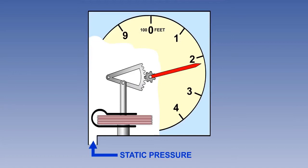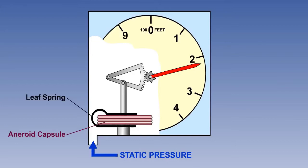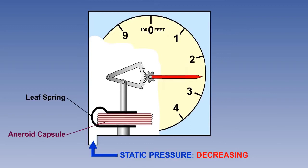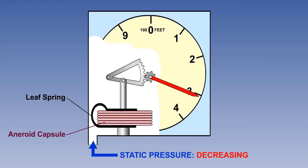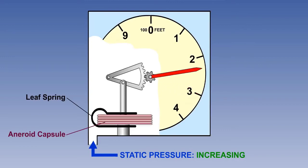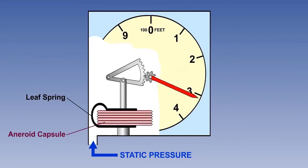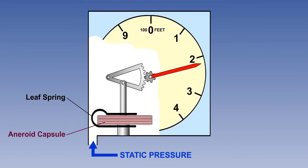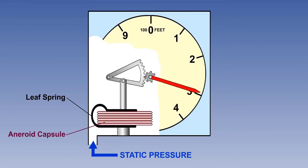Let's look at how the altimeter works. In its simplest form, static pressure is fed into a sealed instrument case from the static source. Inside the instrument case is a partially evacuated capsule, or aneroid capsule. Expansion and contraction of the capsule is kept under control by a leaf spring, and the controlled movement is transmitted via a system of linkages to the pointer on the instrument dial. As altitude increases, the static pressure inside the instrument case decreases. The capsule expands, which causes the pointer to rotate and indicate an increase in altitude. In the descent, the capsule is compressed, and the pointer moves in the opposite direction. The linkage incorporates a temperature compensating device to minimise errors caused by expansion and contraction of the linkage and changes in spring tension due to changes in the temperature of the mechanism.